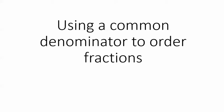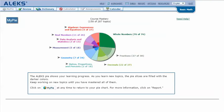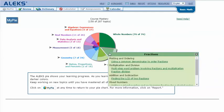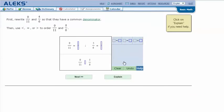Using a common denominator to order fractions. In your ALEKS pie, mouse over the light green slice fractions to reveal the drop-down list of topics you need to cover. Click on using a common denominator to order fractions.